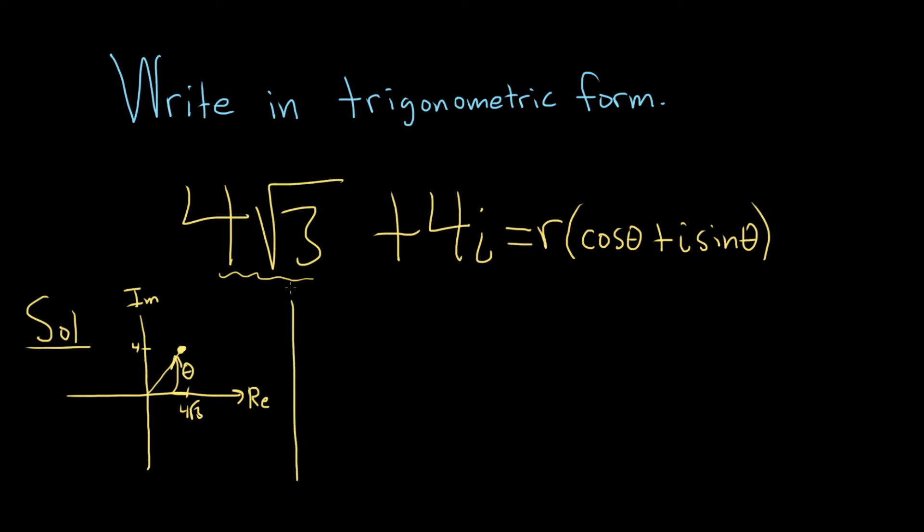So now the next step is to find r. So r is given by the following formula. It's the square root of x squared plus y squared. So in this problem here, this is our x, and this is our y.